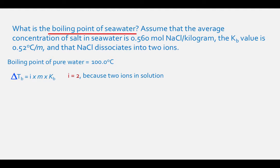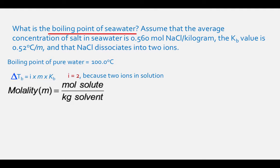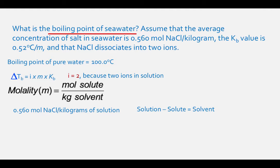The Van't Hoff factor for NaCl is 2 because the NaCl dissociates into two different ions. To calculate the molality of the NaCl, we need to remember that molality is moles of solute divided by kilograms of solvent. The number given — 0.560 mol NaCl per kilogram — is per kilogram of solution, not solvent. We need to convert kilograms of solution to kilograms of solvent by subtracting the mass of the solute.